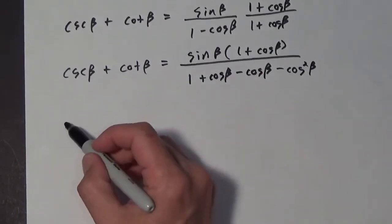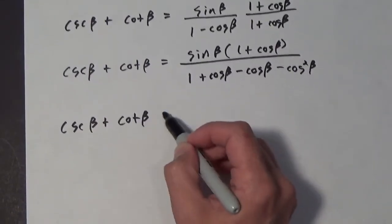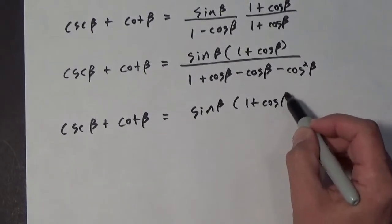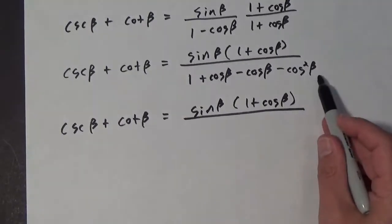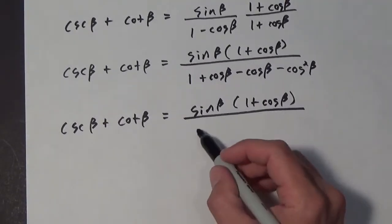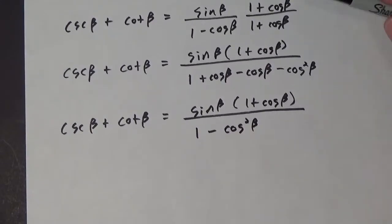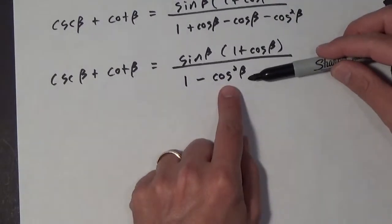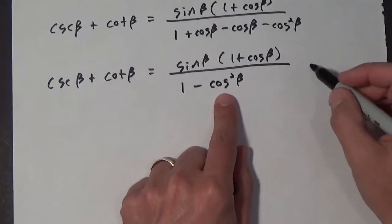In the denominator, you get 1 plus cosine of beta minus cosine of beta minus cosine squared of beta. So then we're going to have the cosecant of beta plus the cotangent of beta equals the sine of beta times 1 plus the cosine of beta all over 1 minus the cosine squared of beta. Notice that when we multiply by the conjugate, we end up with this cosine squared.